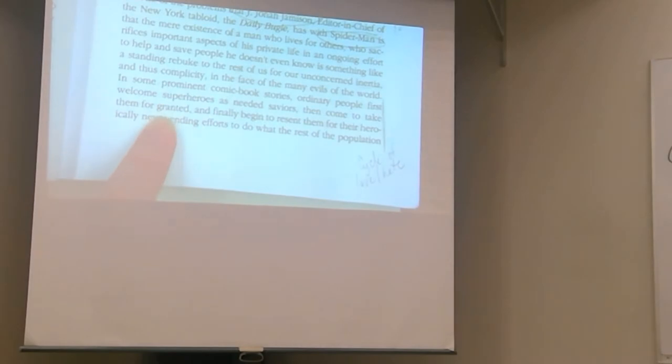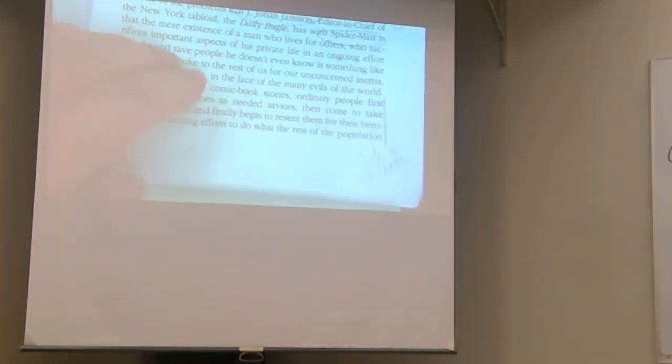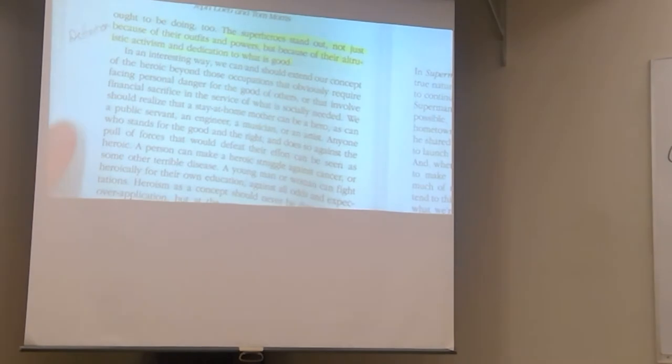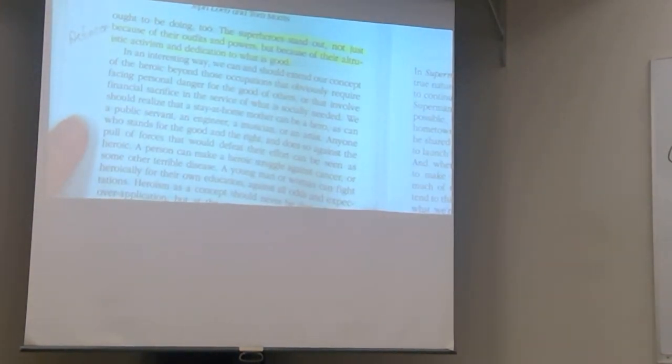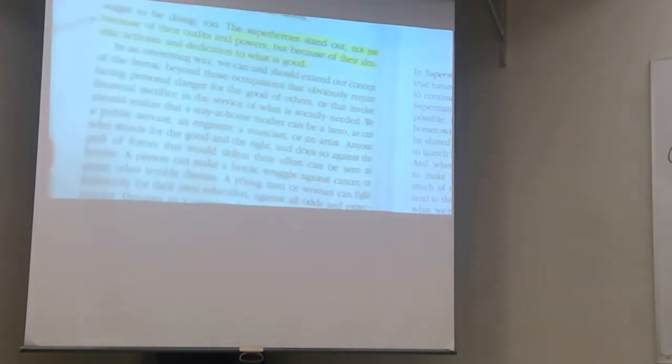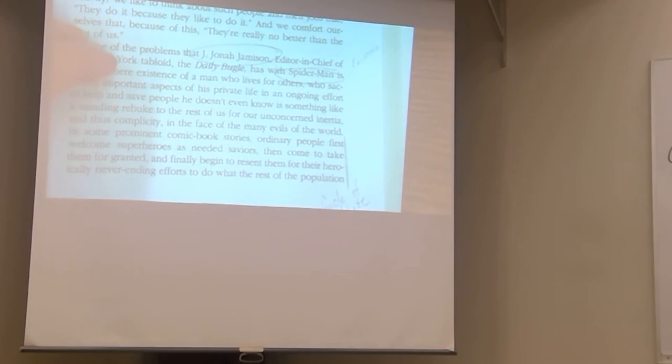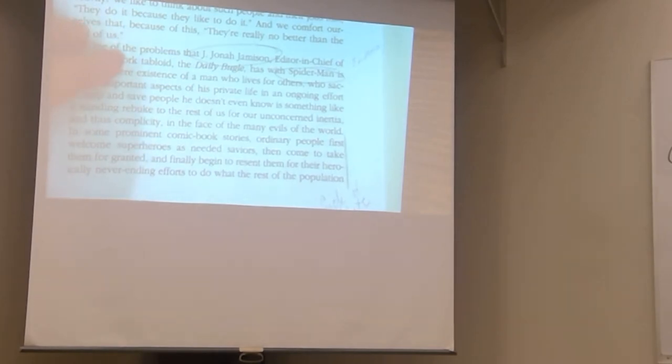Look at the last few sentences on the page. In some prominent comic book stories, ordinary people first welcomed superheroes as their mid-saviors, then come to take them for granted, and finally begin to resent them for their heroically never-ending efforts to do what the rest of the population ought to be doing too. The superheroes stand out, not just because of their outfits and powers, but because of their altruistic activism and dedication to what is good. This is something you need to remember for the rest of the course. It starts at the bottom of page 13 and goes to the top of 14. When we get to the movies for this course, I'm going to be pointing this out to you.